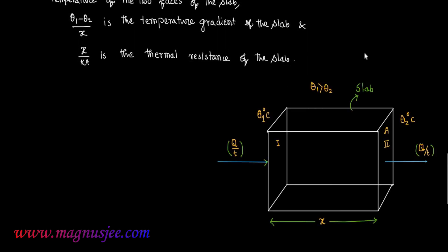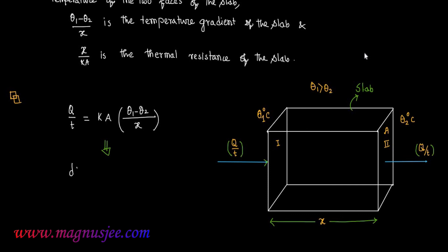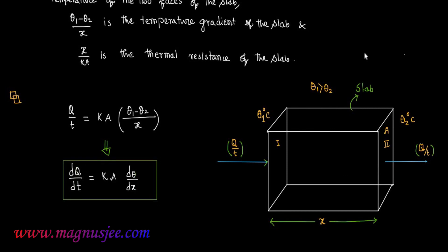The rate of conduction of heat in terms of calculus: in place of Q by T, we write the differential coefficient dQ by dt. So dQ by dt is equal to K·A·(d theta by dx), where d theta is the difference in temperature and dx is the thickness. This is another expression of the rate of conduction of heat in terms of the differential coefficient.